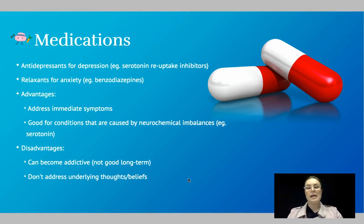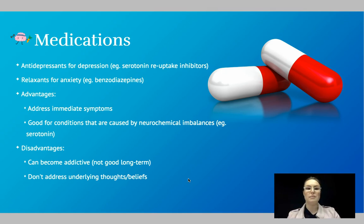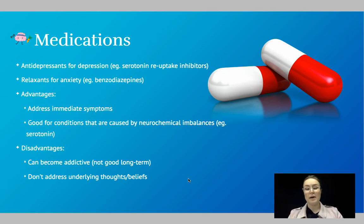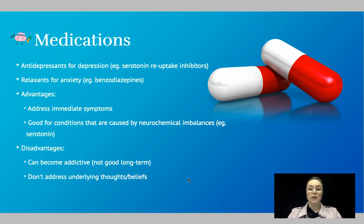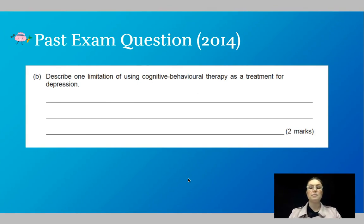Medications are often referred to as the band-aid solution. In extreme cases they are often required, particularly for people who have a neurochemical imbalance. For people with depression we talk about antidepressants such as a serotonin reuptake inhibitor. For people with anxiety, we want a relaxant such as a benzodiazepine — not an antidepressant, as that would make things worse. Advantages are that they address immediate symptoms and are great for conditions caused by an imbalance. Disadvantages are that they can become addictive, particularly benzodiazepines, and they don't address underlying thoughts and beliefs.